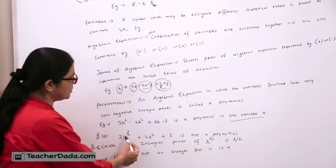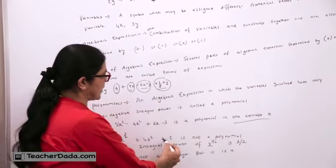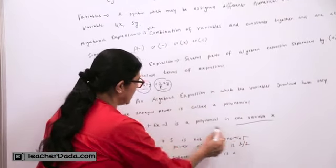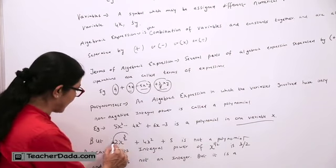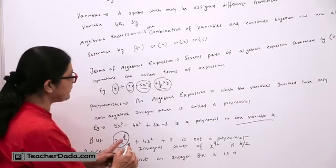2X raised to the power 3 upon 2 plus 4X square plus 5 is not a polynomial. This is not a polynomial because its integral power, the power is 3 upon 2 which is a fraction.